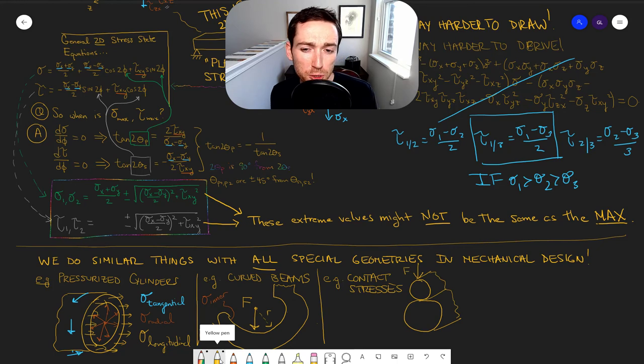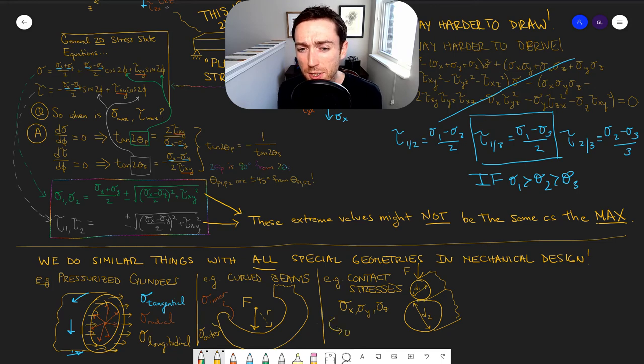Or, for example, you might have rollers or bearings in contact with one another. These could be spherical. And in those cases, you're really going to be doing the same type of thing that we did up there. Go from X, Y, Z to 1, 2, 3 in your own special geometric way.